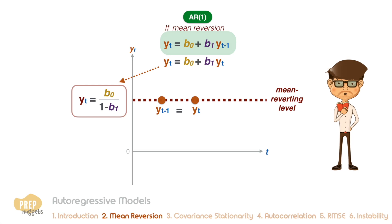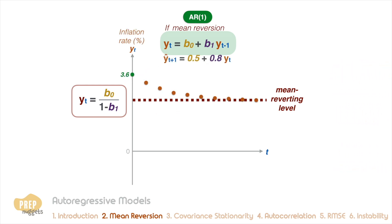So, back to our inflation rate example. Given the AR(1) model, what is the mean reverting level suggested by this model? Pause the video now and work out your answer.